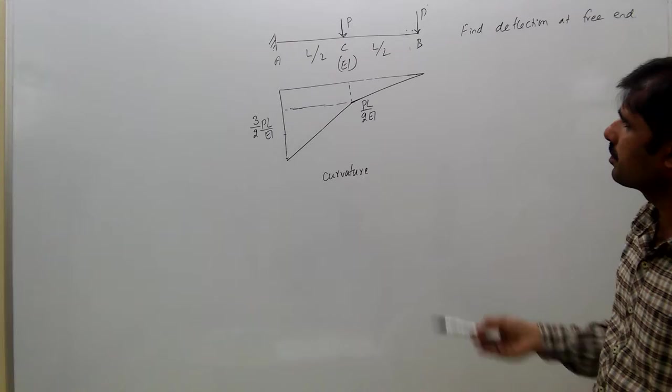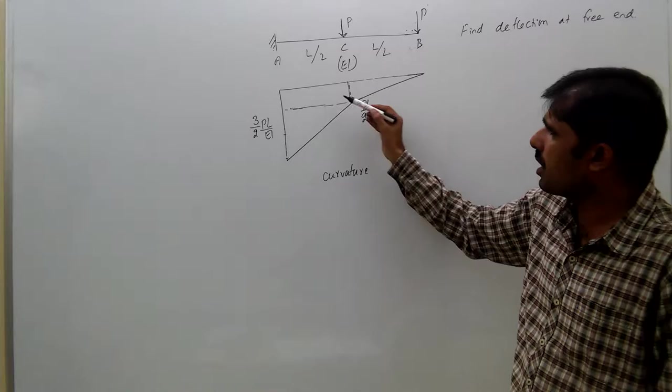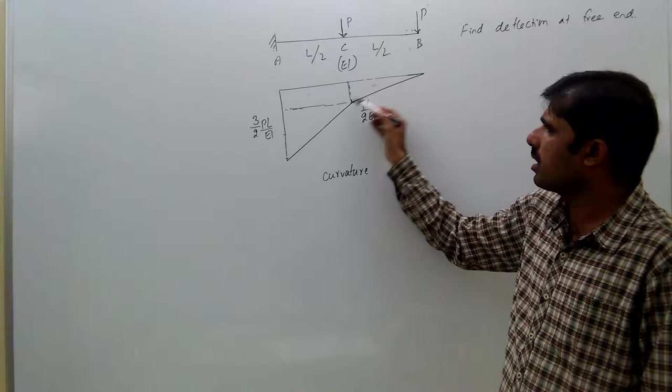Now we need to find deflection at B, that means we need to take moment of area about B. You see here we have three figures: one is rectangle, another is one triangle, another here one triangle.